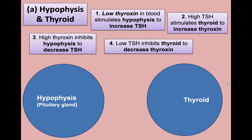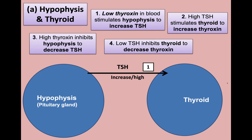Scenario one: the thyroxin level is lower than normal in the blood. This decreasing level of thyroxin becomes a stimulus, and it is automatically picked up by the hypothalamus, also known as the pituitary gland — our control center. The control center picks up this stimulus, which is the decrease in thyroxin level, and starts to secrete more TSH.